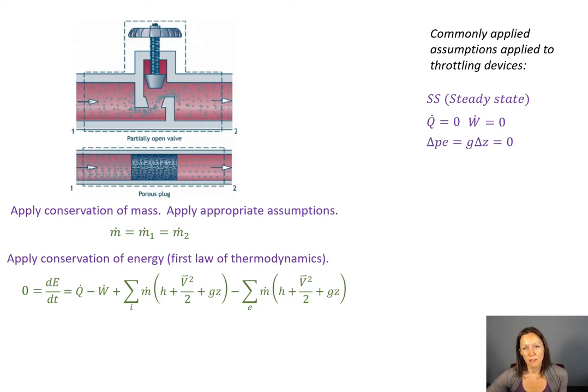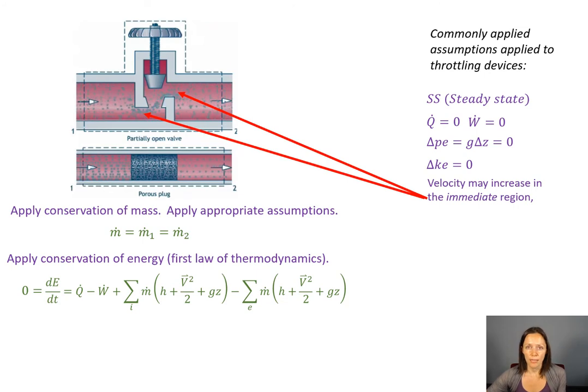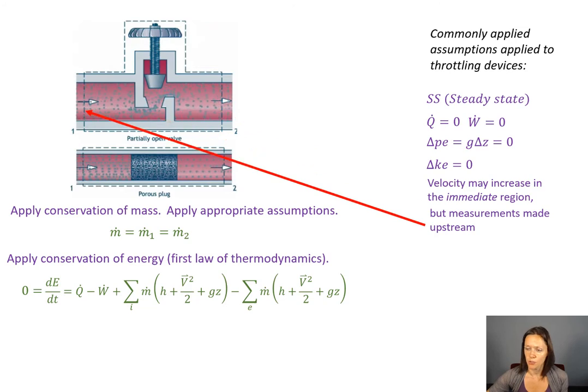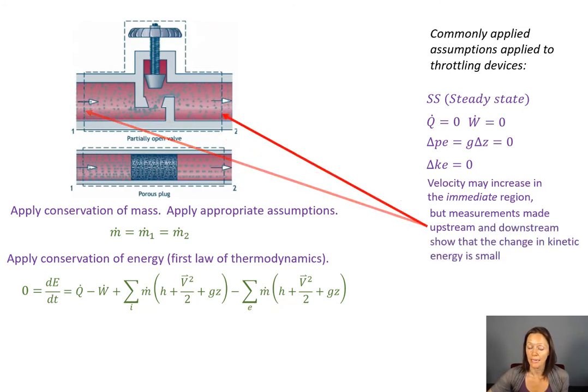There's no significant change in potential energy. And there is not much change in kinetic energy. And sometimes people get a little bit stuck on this because the velocity, if you look in the immediate region of that throttling device, the velocity may increase. And so the kinetic energy will increase as well in the immediate region. But the way that we've drawn our control volume, we've widened that range a little bit. And so if you make measurements upstream and downstream, you can see that the kinetic energy change is very small between those two regions.